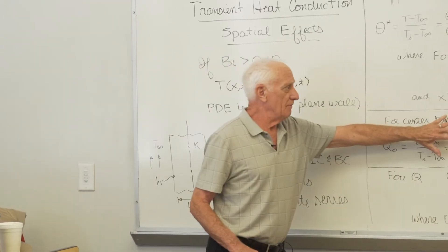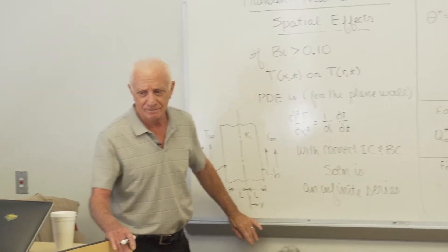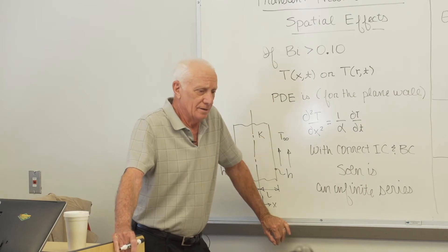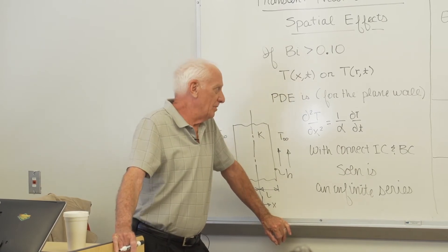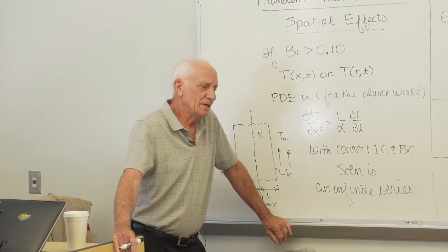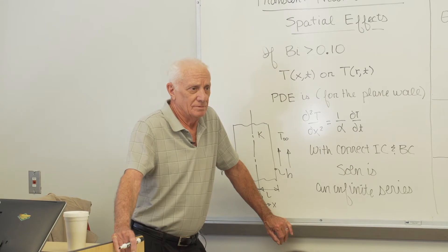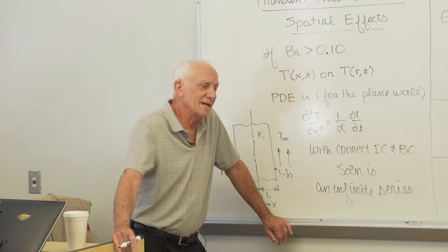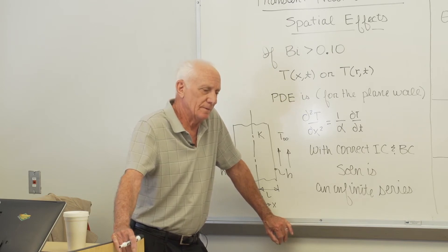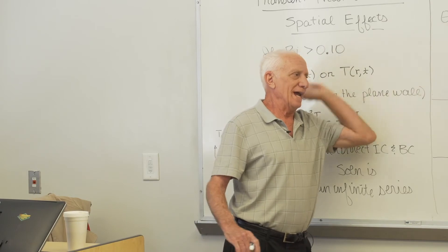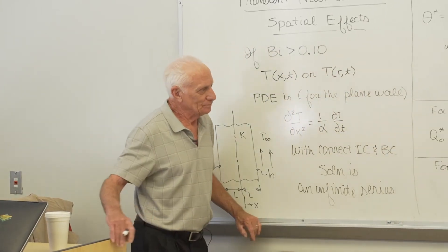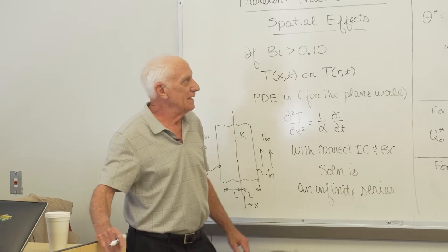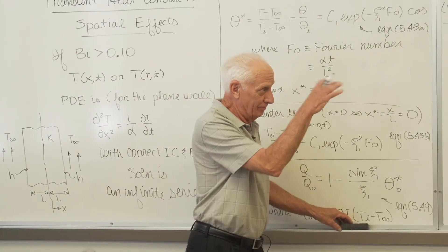Can you use the approximate solution if the Biot number is less than 0.1? Of course — it's the actual solution to the PDE. But if Bi < 0.1, take the easy way out with lumped heat capacity — two equations instead of nine. If Bi < 0.1, use lumped heat capacity; the approximate solution works for any Biot number, but lumped heat capacity only works if Bi < 0.1. Let's take an example problem.